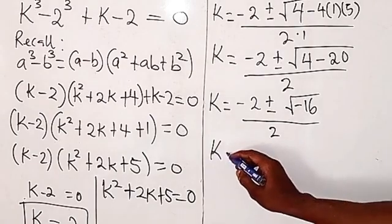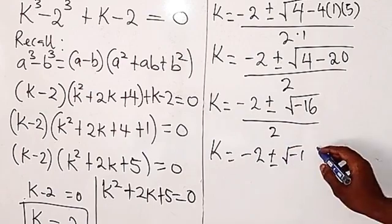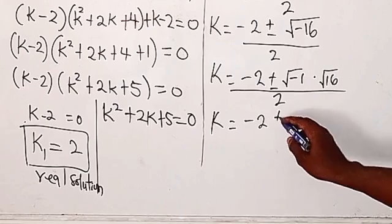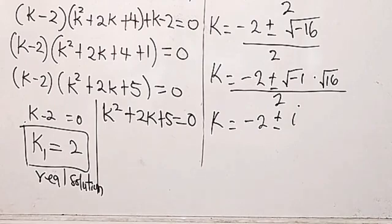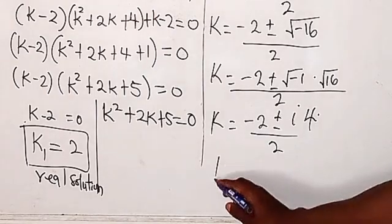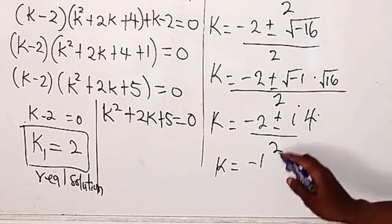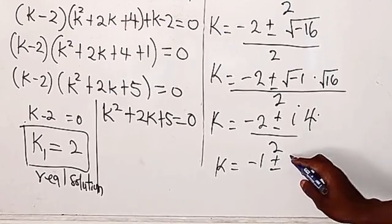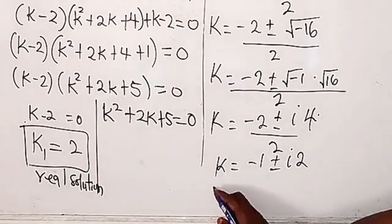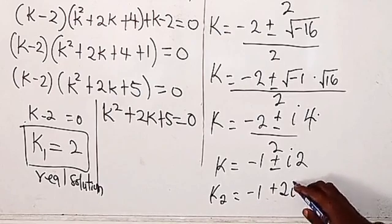So from here we have k equals minus 2 plus or minus. The square root of minus 16 can be split as the square root of minus 1 multiplied by the square root of 16, all divided by 2. The square root of minus 1 is i, and the square root of 16 is 4, divided by 2. We can see 2 is common in all terms, so dividing through by 2 we get minus 1 plus or minus 2i.